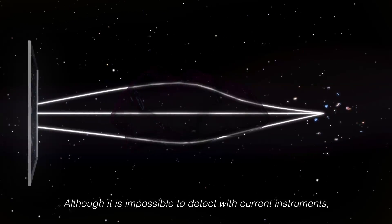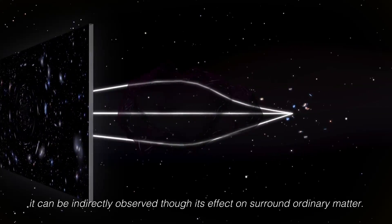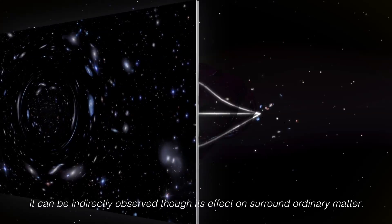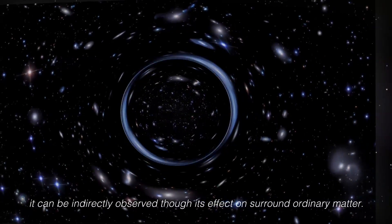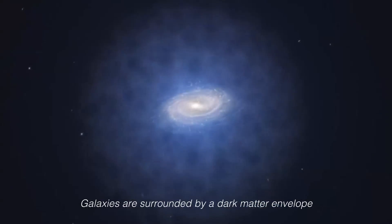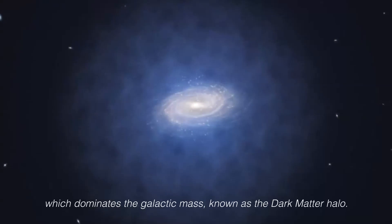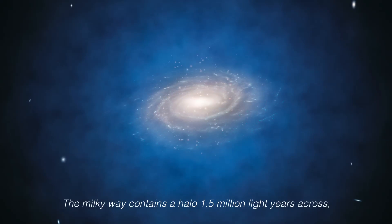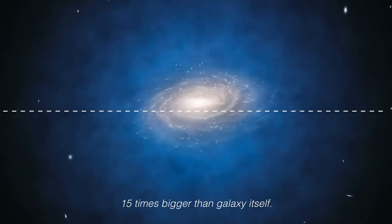Although it is impossible to detect with current instruments, it can be indirectly observed through its effect on surrounding ordinary matter. Galaxies are surrounded by a dark matter envelope which dominates the galactic mass, known as the dark matter halo. The Milky Way contains a halo 1.5 million light-years across, 15 times bigger than the galaxy itself.